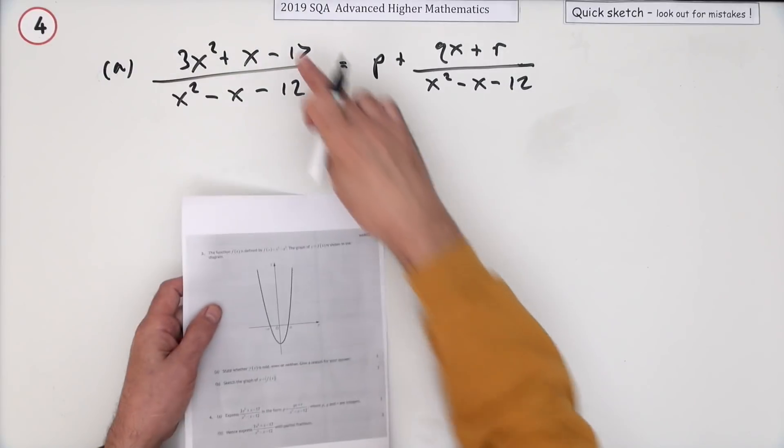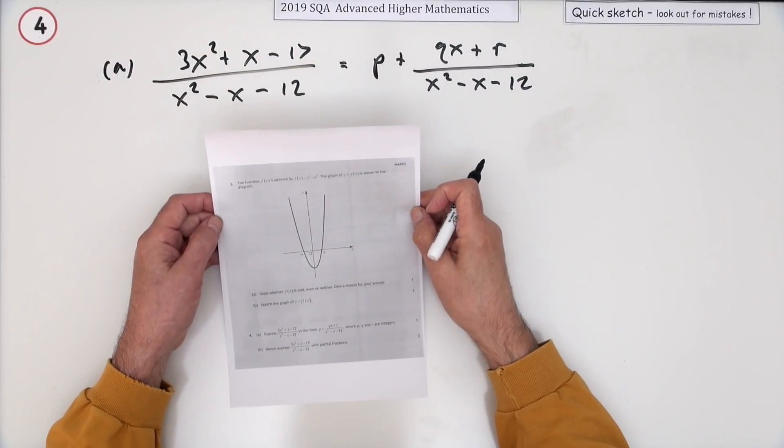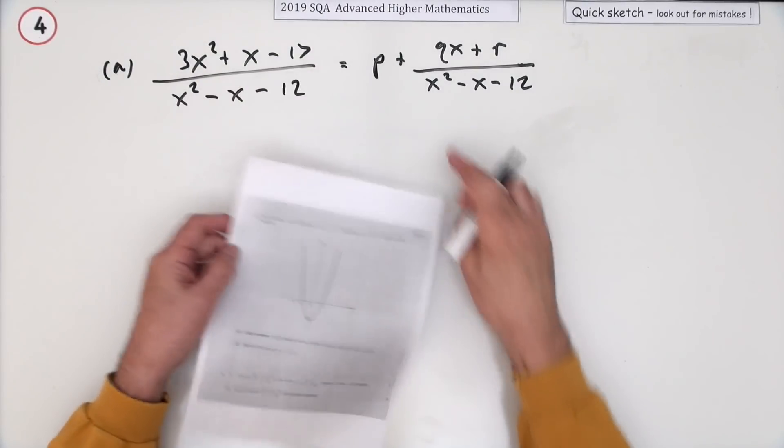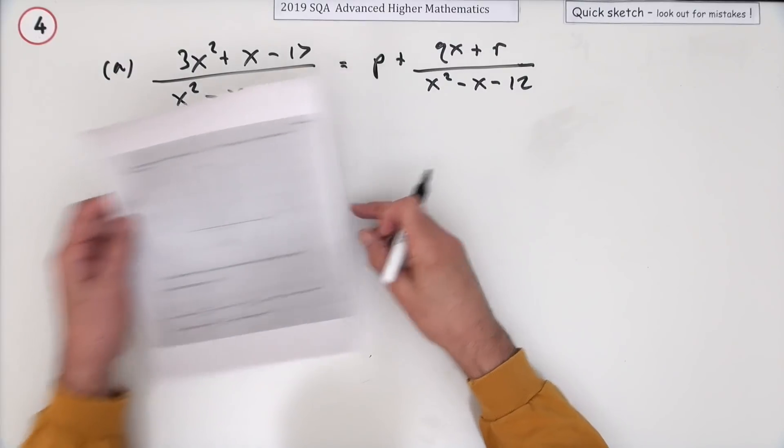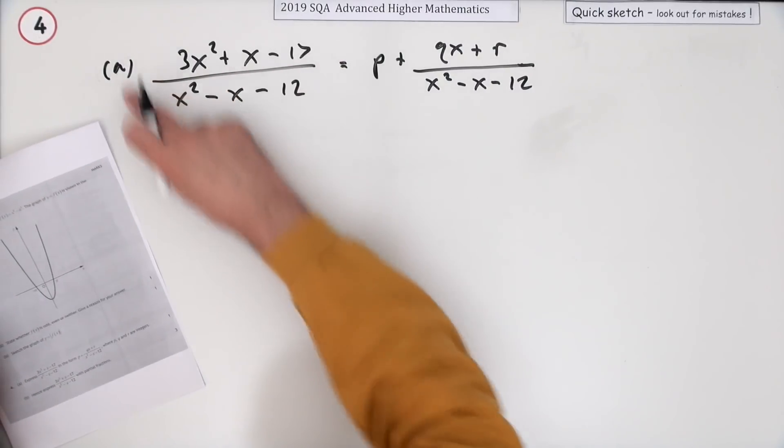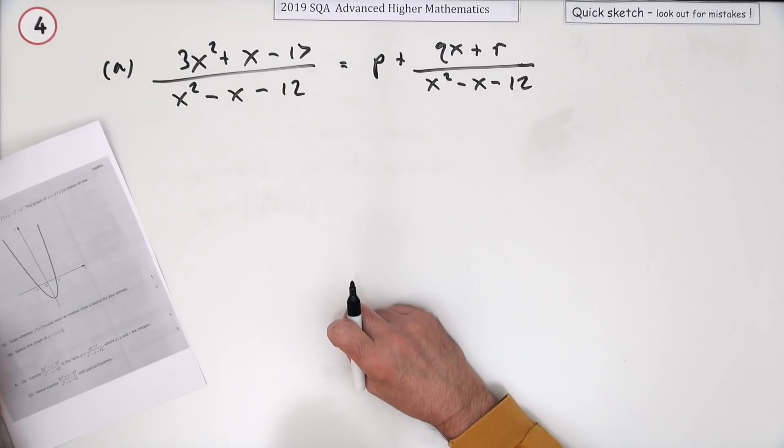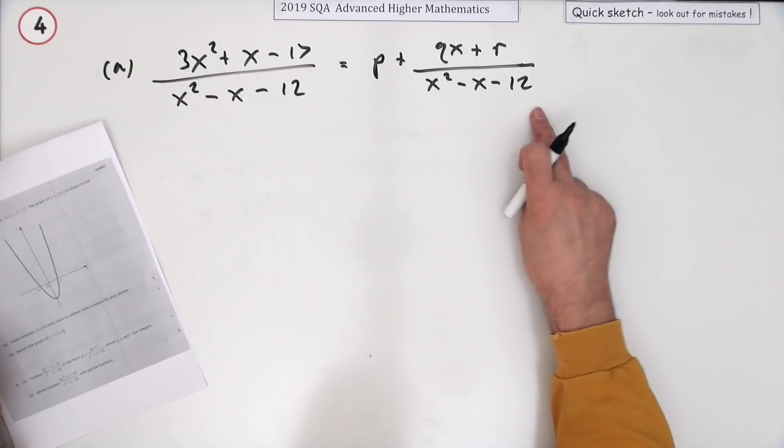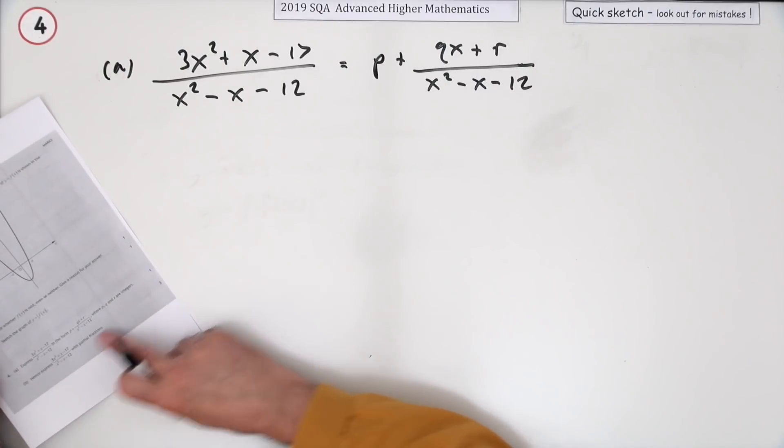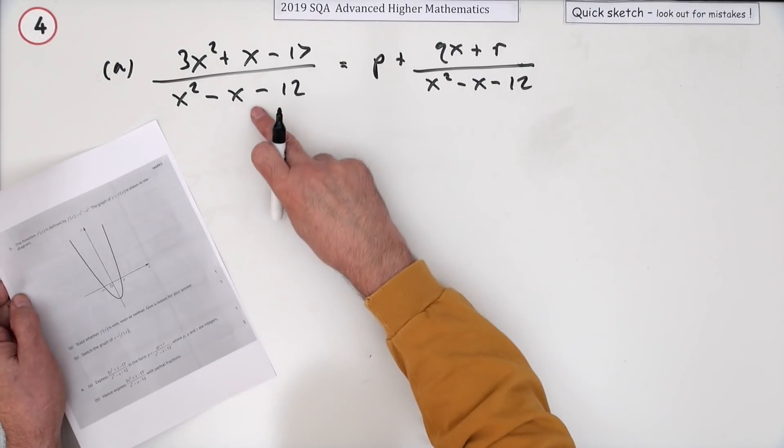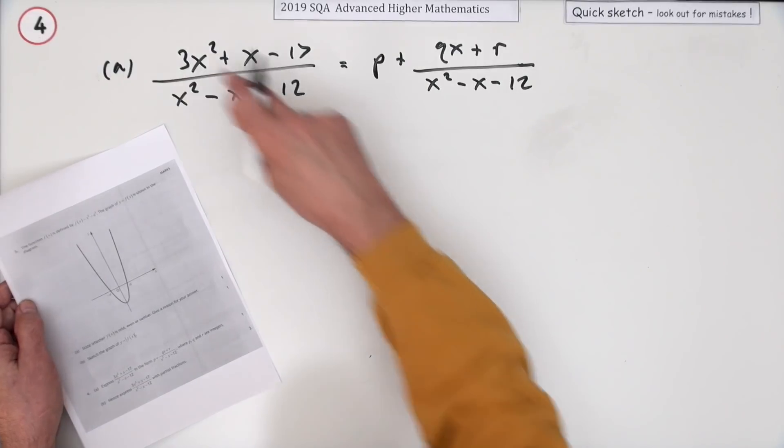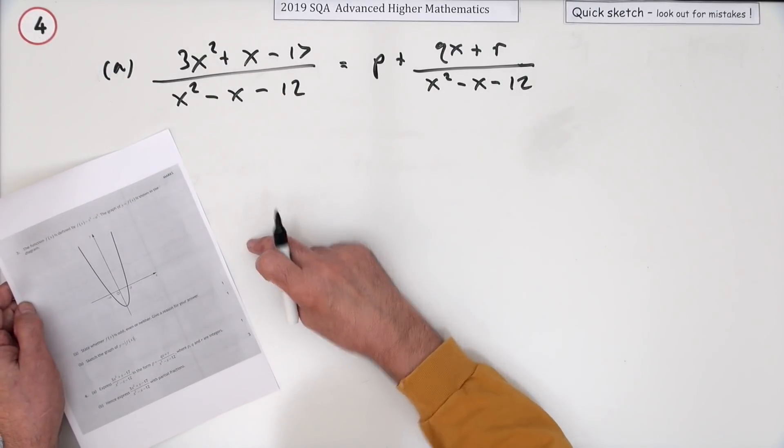Number four from the 2019 SQA Advanced Higher Maths - four marks for partial fractions. In the first part it says here's this rational expression, write it in this form. Presumably they're doing that because in the second part it says hence write this in partial fractions, in case you forgot to divide it in. It needs to be a proper fraction and this isn't - the degree of the numerator is the same as the denominator.